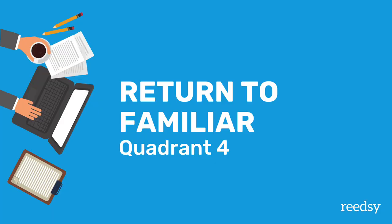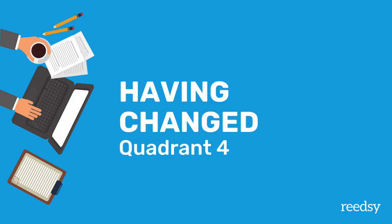Step seven brings us into the fourth quadrant and is known as Return to the Familiar — this is where the character comes back to their familiar world. And finally, step eight is Having Changed. This is basically the denouement, where we see the character in their familiar world, but the events of the story have changed them. Whatever their original problem was, whatever was missing, they're able to fix it because they've changed over the course of the story.